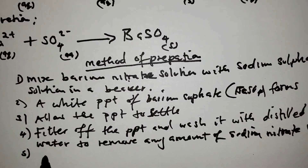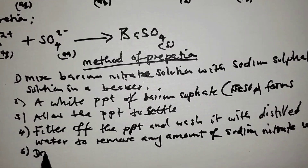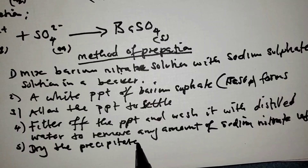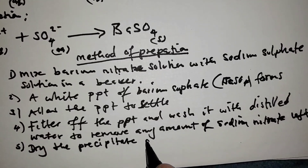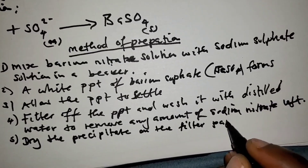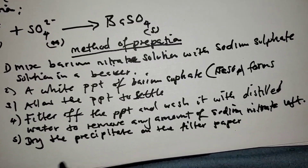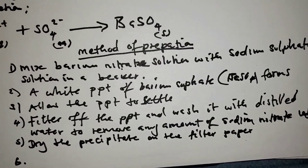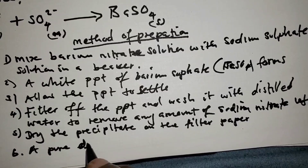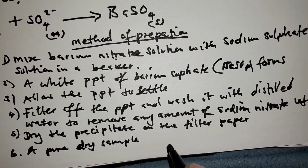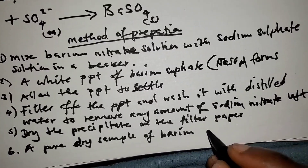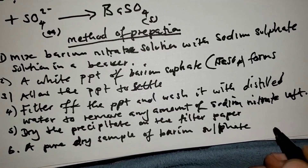Step five: dry the precipitate on the filter paper. After drying, the final step gives you a pure dry sample of barium sulfate. This completes the method of preparation.